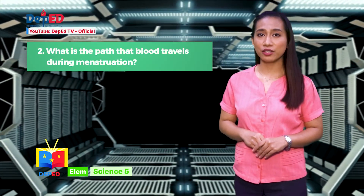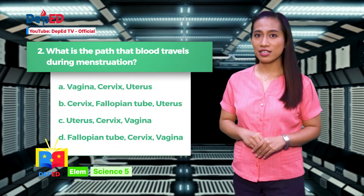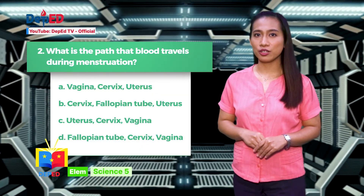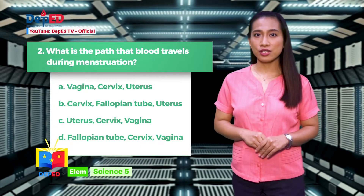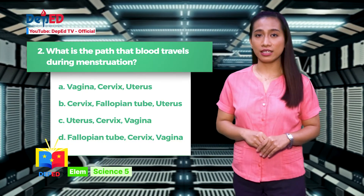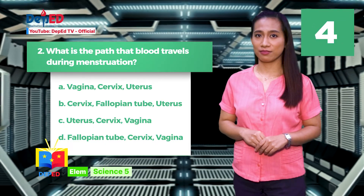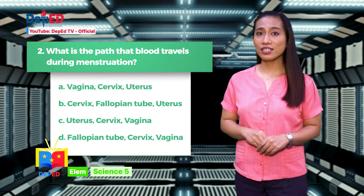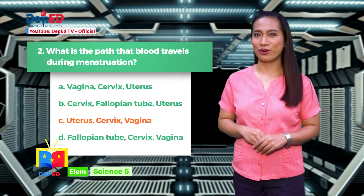Number two: What is the path that blood travels during menstruation? A. Vagina, Cervix, Uterus. B. Cervix, Fallopian tube, Uterus. C. Uterus, Cervix, Vagina. If your answer is letter C — Uterus, Cervix, Vagina — give yourself a point.